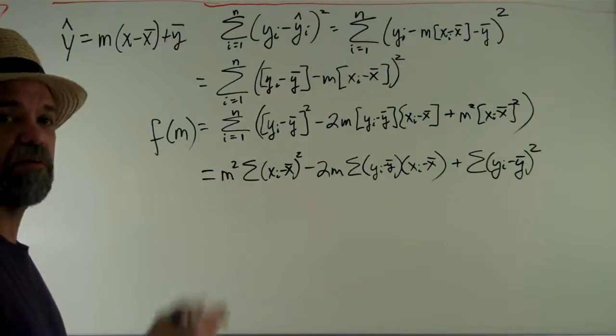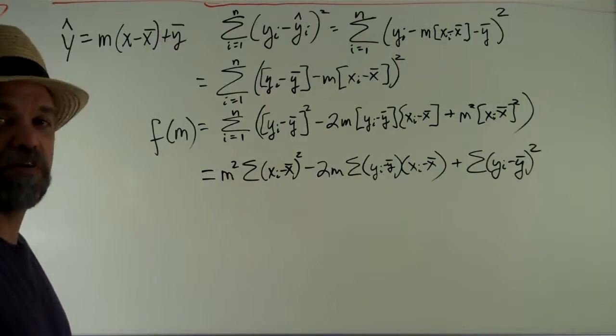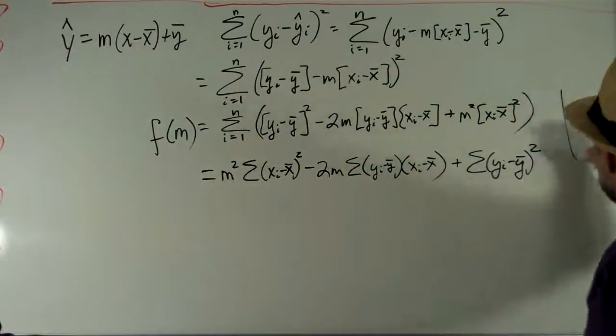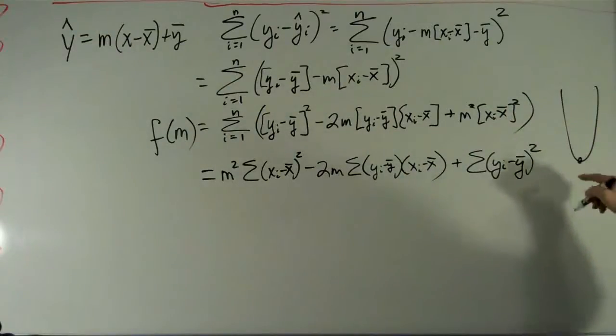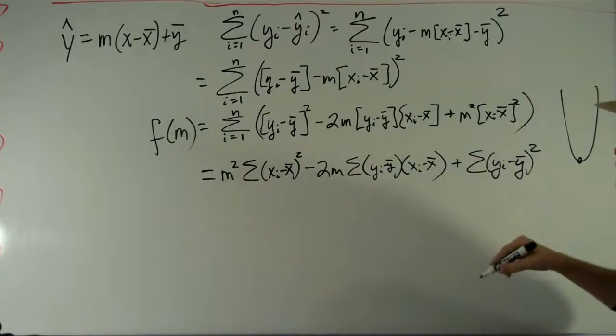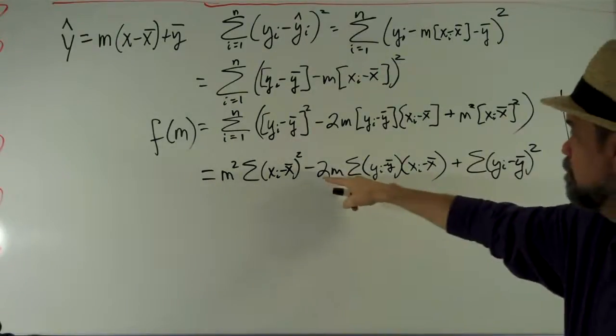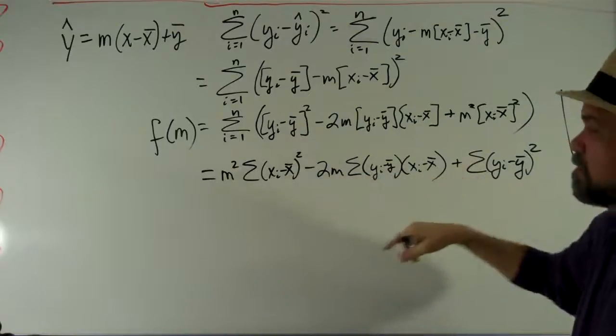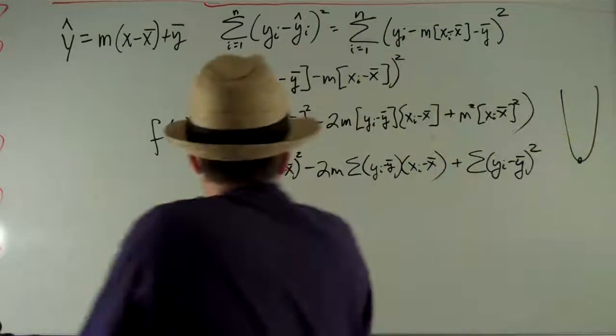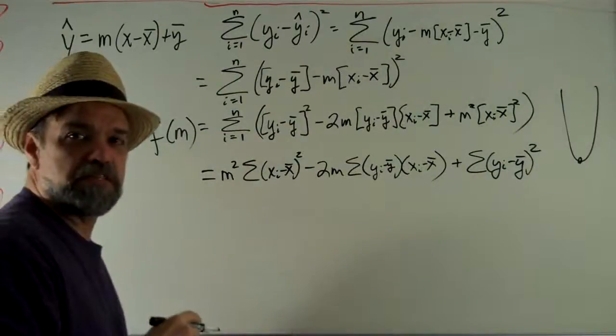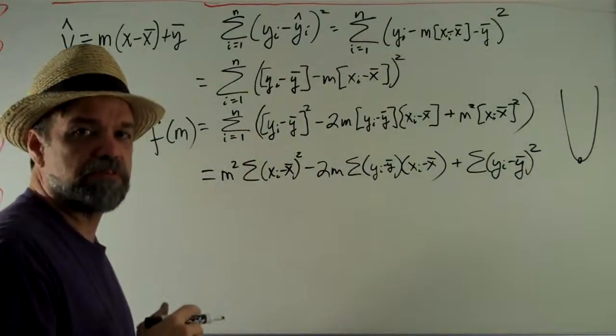Just like last time, we can find the minimum of this function. It's a parabola, and the vertex is going to be the minimum. The vertex is negative middle coefficient over two times the first coefficient. Statistics can be a painful process sometimes.